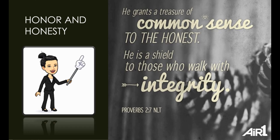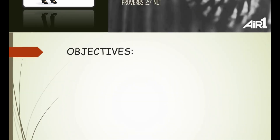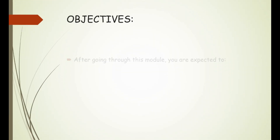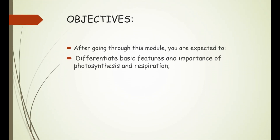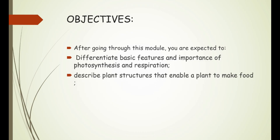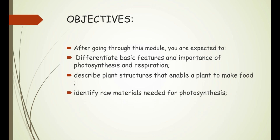After going through this module you're expected to: differentiate basic features and importance of photosynthesis and respiration; describe plant structures that enable a plant to make food; identify raw materials needed for photosynthesis; and describe the process of food making in plants.